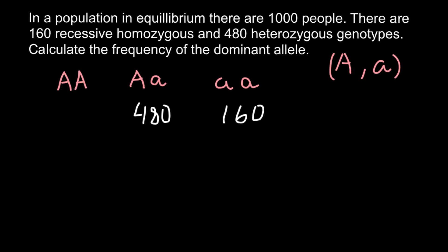480 plus 160 would be 640, and the total number of people is 1000. So 1000 minus 640 means the number of people who belong to the homozygous dominant genotype would be 360.